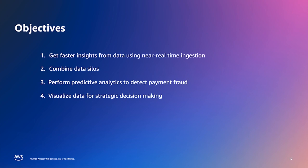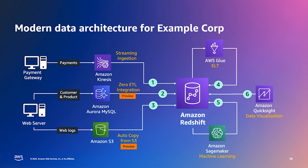The objectives of this analytics application are multifold: first, to ingest data from these three sources in near real-time to get faster insights; second, to combine, transform, and make data available for reporting; third, to use machine learning to detect if any payments from the payment gateway are fraudulent; and finally, to visualize the transformed data using dashboards. The architecture shown achieves these objectives. For data ingestion, we're going to use three easy-to-use integrations: streaming ingestion, Zero ETL integration, and autocopy from S3.